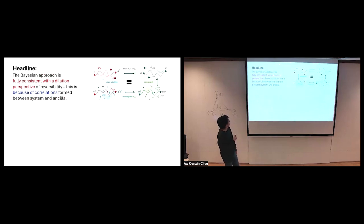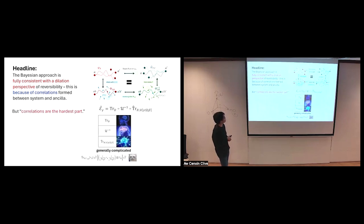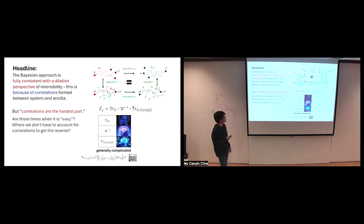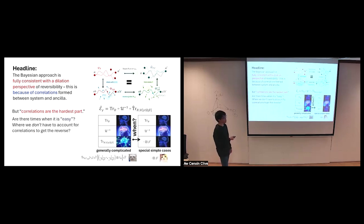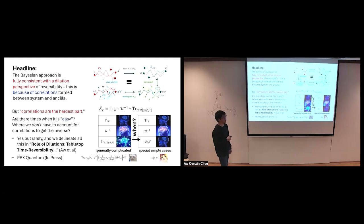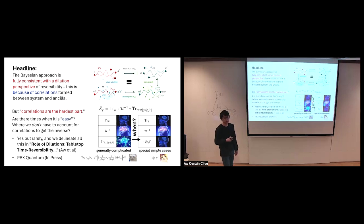So the Bayesian approach is consistent with the dilation picture of effective channels, ultimately because of the role that correlations play. One might ask whether there are situations where this simplifies - yes, for example when you have an uncorrelated bath. For those working in quantum thermodynamics, you may recognize that for some scenarios like thermal operations, it's very easy. These simple cases are very physically significant, but in general, the full Bayesian treatment is needed.